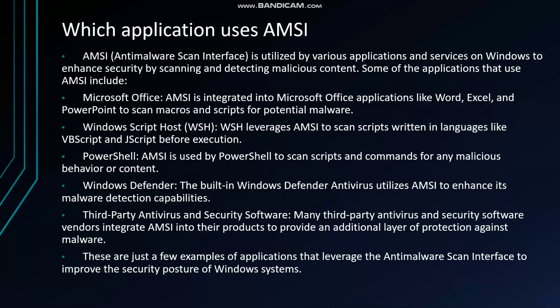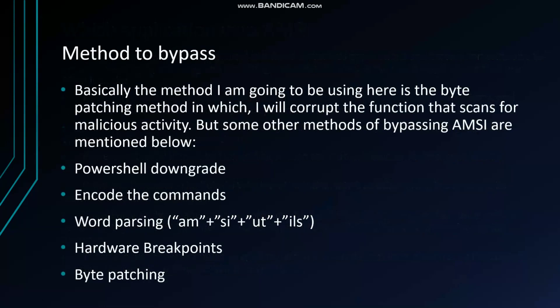Those were a few examples of how the anti-malware scan interface can be used to detect anything malicious. Now, one of the main bypassing methods I'm going to be showing you is byte patching. Basically, whenever the session is running, we take the AmsiScanBuffer function and patch that byte so that the function is corrupted — and whenever it tries to use that function, it won't be able to.